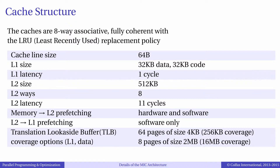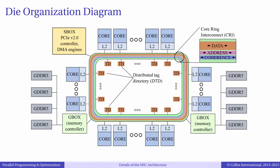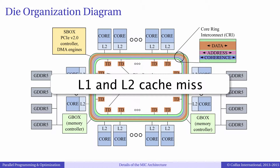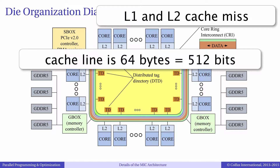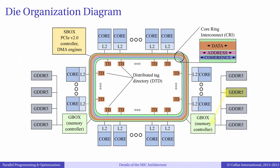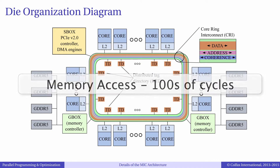To see this, let us consider what happens in the hardware when an application running on the core accesses a data element at some memory address. There are four cases to consider. The first case is when data is not in the cache, either because it has never been accessed or because it has been evicted. The core will first check the local level 1 cache, and because the data is not there, the core will refer to the tag directory to check if the address is cached somewhere in the level 2 cache. After that the core will request the cache line, which is 64 bytes long, from the memory controller which then accesses the GDDR5 memory bank to get the cache line. This line is then copied to the level 2 cache of the local core and then to level 1 cache before it is finally used. This operation is extremely costly, taking hundreds of cycles to complete.